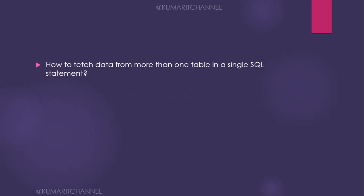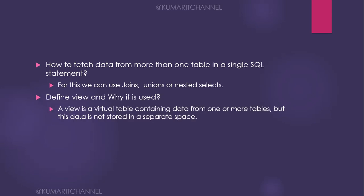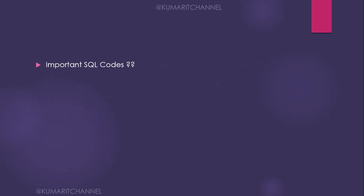How do you fetch data from more than one table in a single SQL statement? You can use joins, unions, or nested selects. Next: define a view and why it is used. A view is a virtual table containing data from one or more tables, but the data is not stored in a separate space. Why you use a view depends on the project.